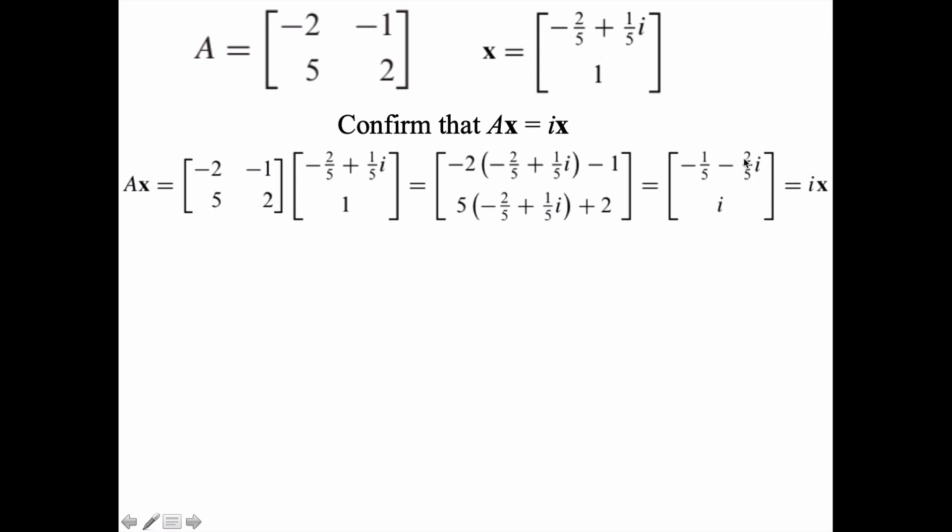You will see that really does represent i times the original eigenvector that we used. There you see the negative 2 fifths i, and i times i is negative 1, so 1 fifth i times i becomes negative 1 fifth. i times 1 is i, and it does indeed work.